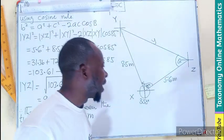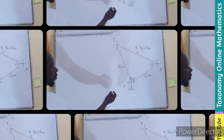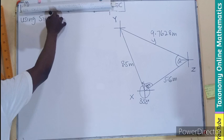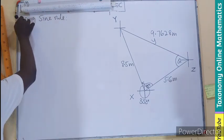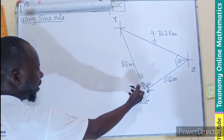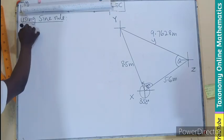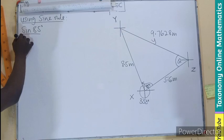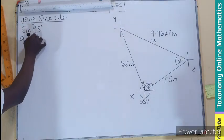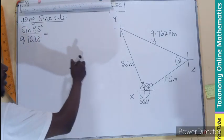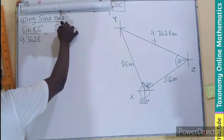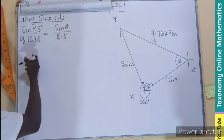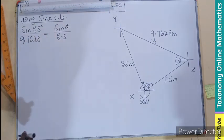Using sine rule, we are going to compare the sides. So let's see the sine of the angle 85 degrees is opposite to the side. We have 9.7628. The sine of the angle theta, opposite to this side, 8.5. So 1, 2, 3 is known. We can cross multiply.